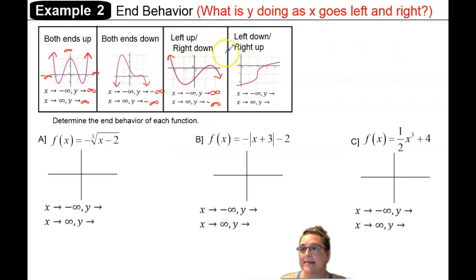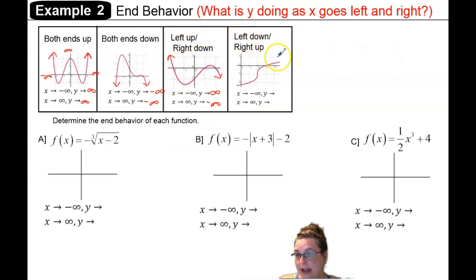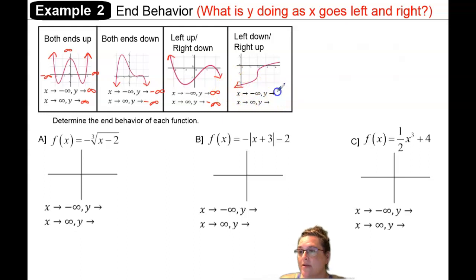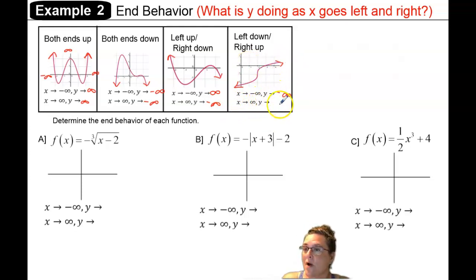That would be left end up, right end down. The last thing that could happen with a polynomial is that it starts down and ends up. So as x approaches negative infinity on the left, we can see the y is headed down, so y is approaching negative infinity. As x approaches positive infinity on the right, we see that headed up, so the y is approaching positive infinity.